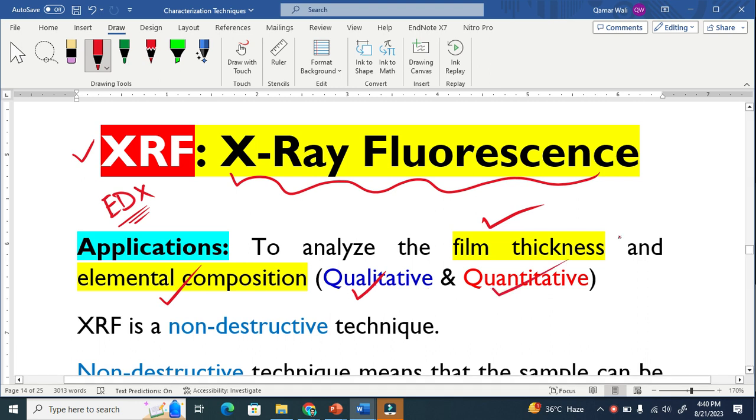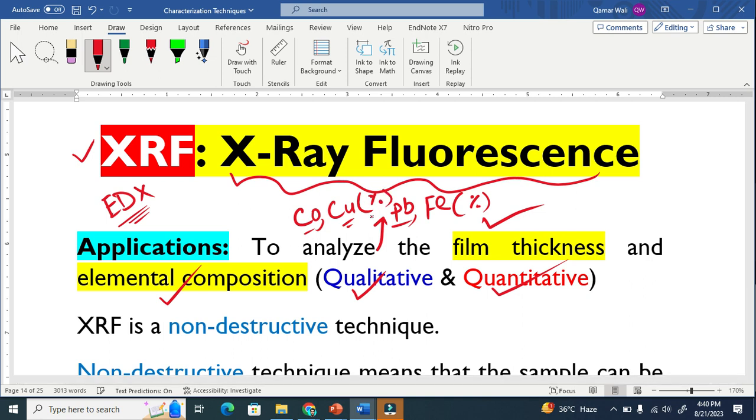Qualitatively and quantitatively. Qualitative means that if there is an element that exists in the sample—there is an element iron, there is an element of cobalt or copper—this means qualitatively it will analyze that the sample element exists. Quantitative means what is the atomic percent of iron that exists in that sample, what is the weight percent of copper that exists in that sample. This means quantitative means number.